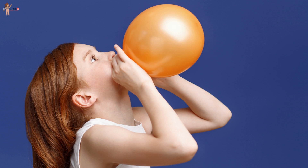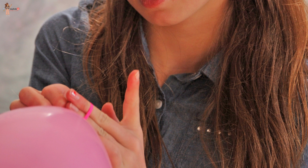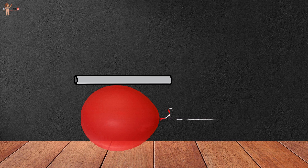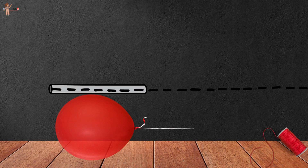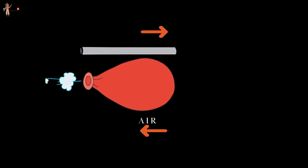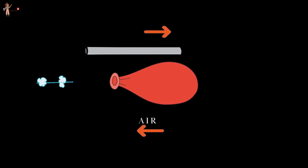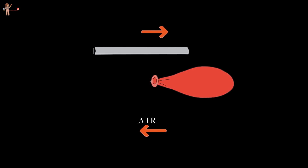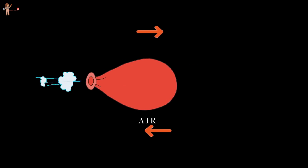Activity: Take a big rubber balloon, inflate it fully, and tie its neck using a thread. Using adhesive tape, fix a straw on the surface of this balloon. Pass a thread through the straw and hold one end in your hand or fix it on the wall. Now remove the thread tied to the neck of the balloon and let the air escape. You will observe that the straw moves in the direction opposite to the direction in which the air from the balloon leaves.